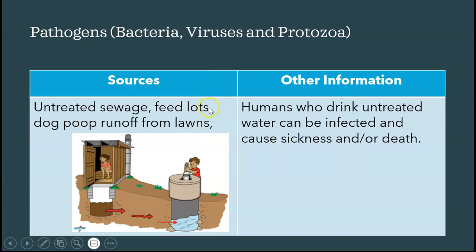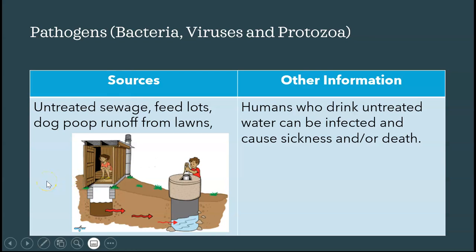Sources of pathogen pollution include sewage, feedlots, and dog waste runoff from lawns into storm drains and rivers. This can introduce harmful bacteria like E. coli, viruses, and protozoa. Wastewater treatment plants kill these pathogens, but untreated water can make you very sick. When camping, you should boil, filter, or use a solar heater to treat stream water before drinking.